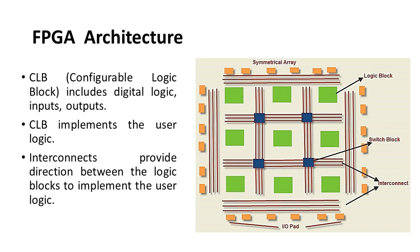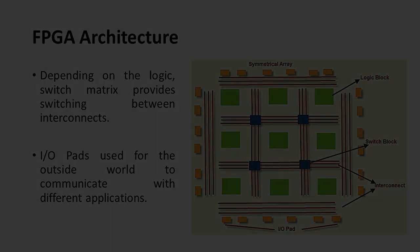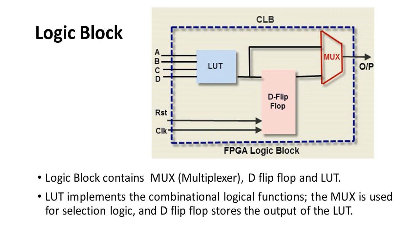Depending on the logic, the switch matrix provides switching between interconnects. I/O pads are used for the outside world to communicate with different applications. The logic block contains a MUX (multiplexer), a D flip-flop, and a LUT. The LUT implements combinational logic functions, the MUX is used for selection logic, and the D flip-flop stores the output of the LUT.